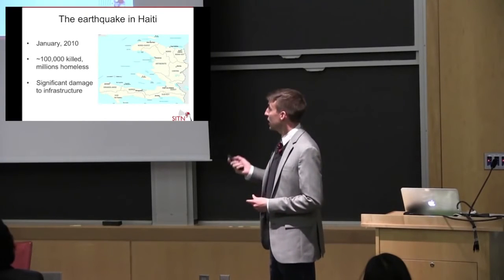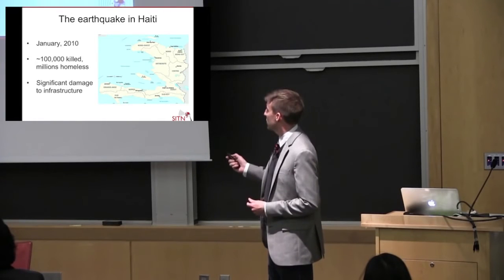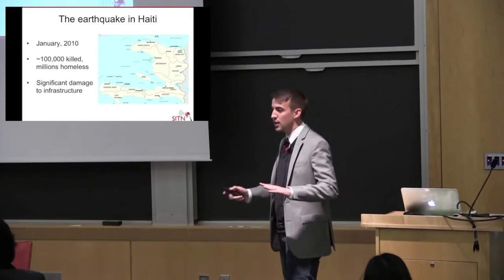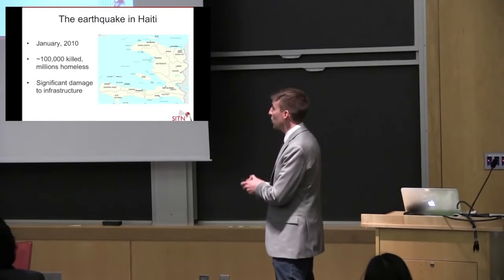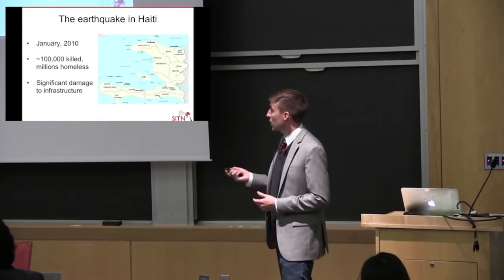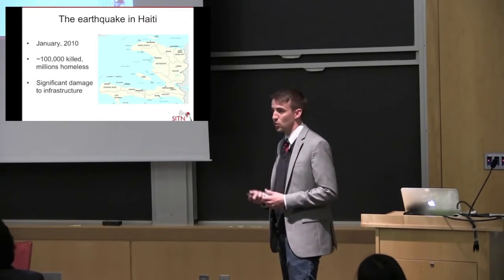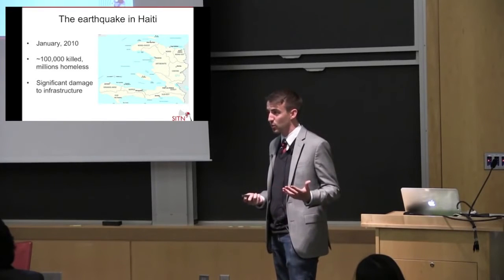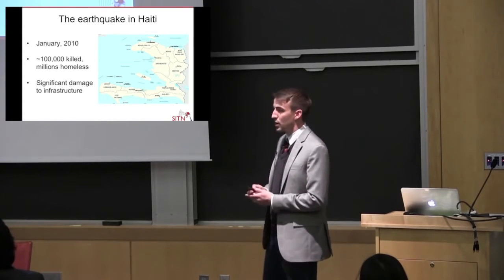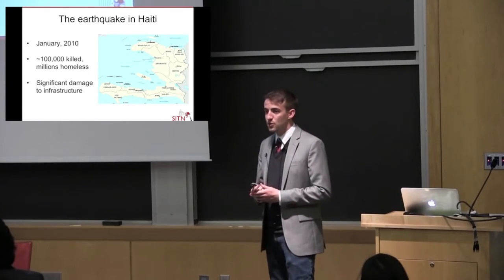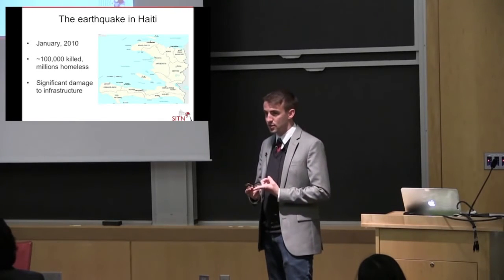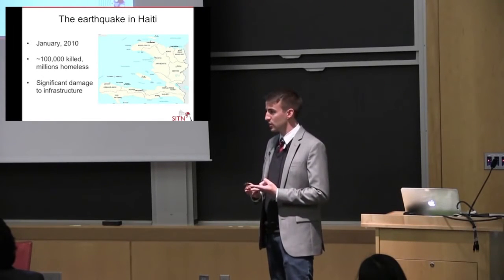In 2010, Haiti was struck by a massive earthquake centered just outside of the capital city of Port-au-Prince. This was an utterly devastating blow to Haiti — it killed over 100,000 people and left millions more homeless. It also caused significant damage to infrastructure, which was severely lacking in Haiti to begin with. In the wake of this earthquake, essentially millions of Haitians were living in close quarters in places without access to sanitation and without access to clean water.